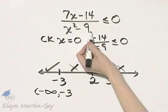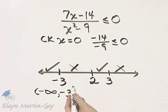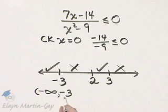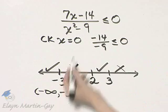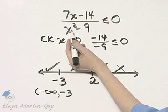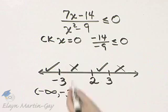Everything gets brackets except numbers that came from the denominator. 3 and negative 3 came from the denominator. Can you see that negative 3 in this case cannot have a bracket because x cannot be negative 3? That would make the denominator zero.